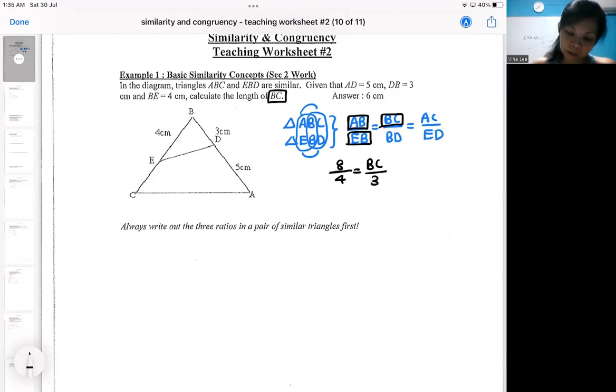So this one is a bit useless. The AC is useless because it's not provided. ED is also useless because it's not provided. So anyway, from here is already sufficient that you can cross multiply. So you are still expected to do this kind of calculation except that you will need to prove similar triangle.